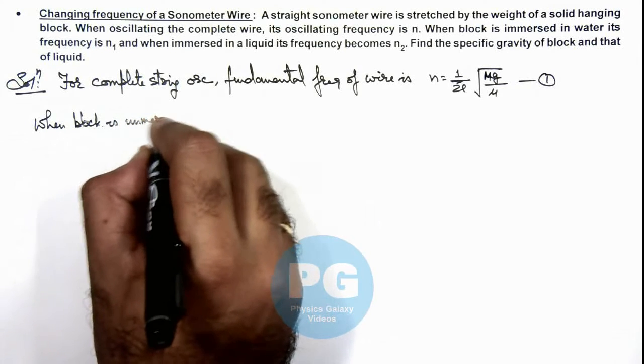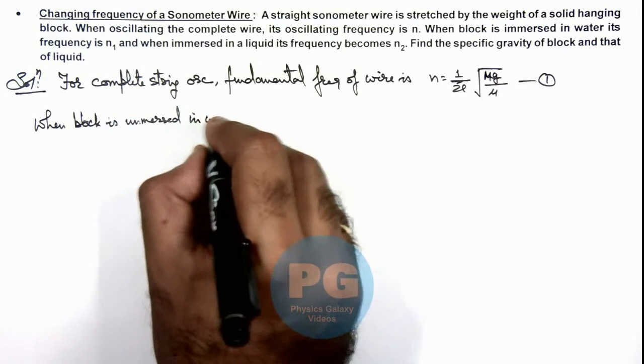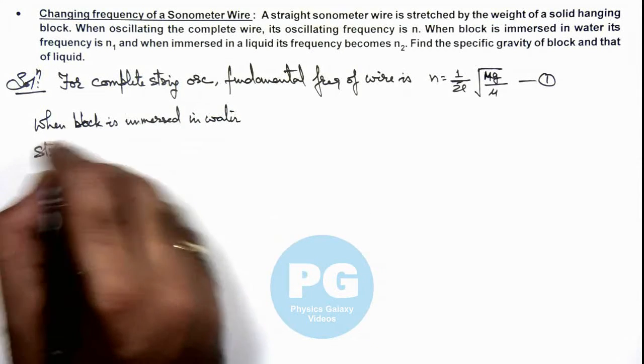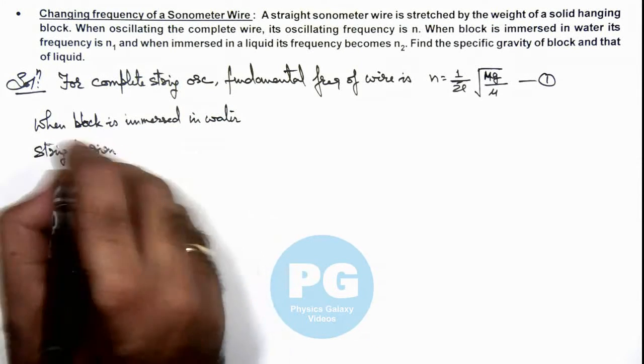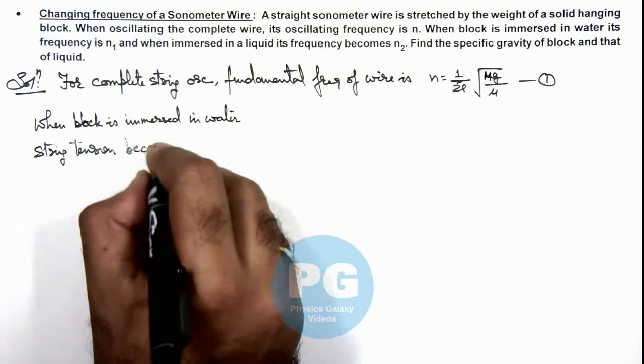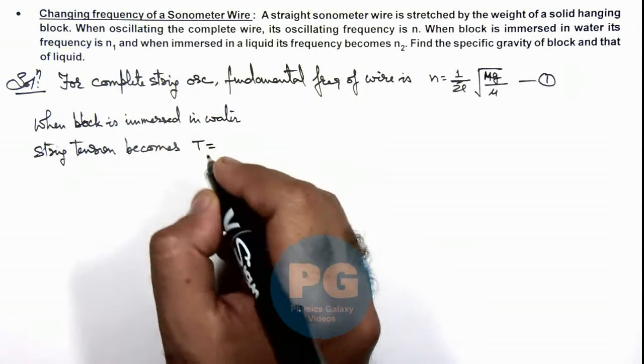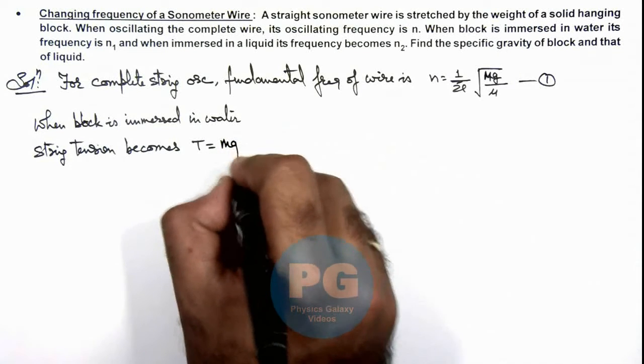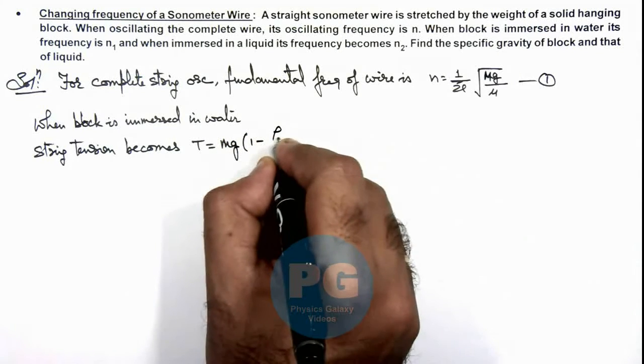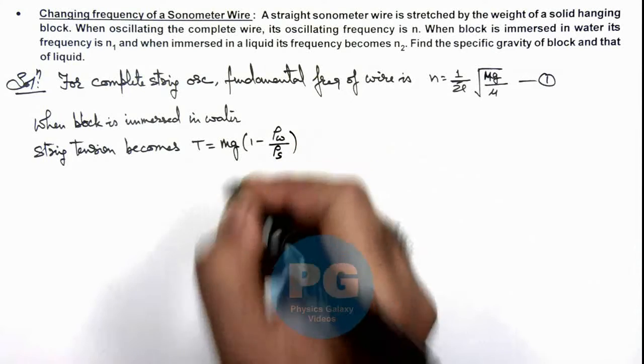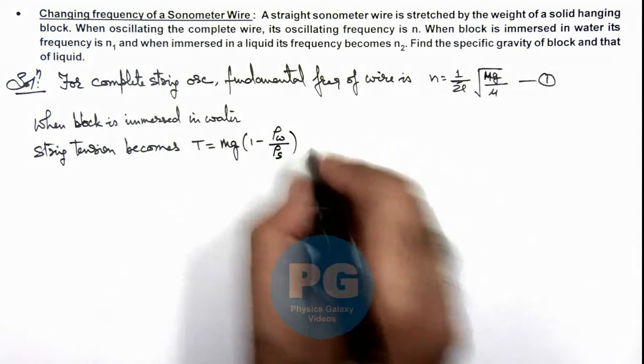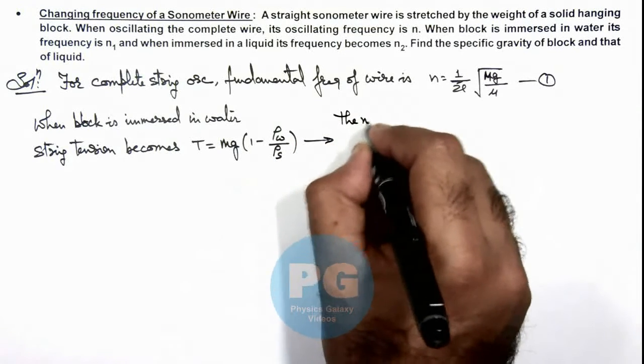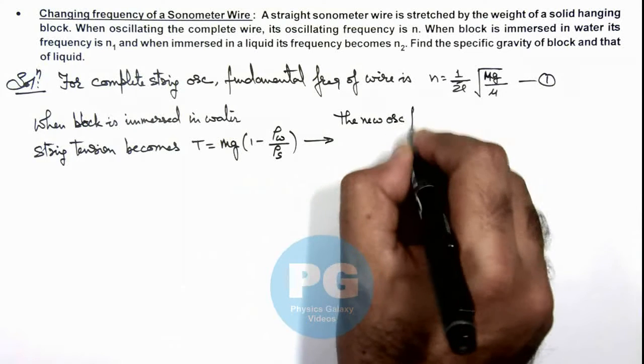When the block is immersed in water, the string tension becomes the effective weight of the block, which we've already studied can be given as mg(1 - ρ_water/ρ_solid). Using this value, the new oscillation frequency becomes n₁.